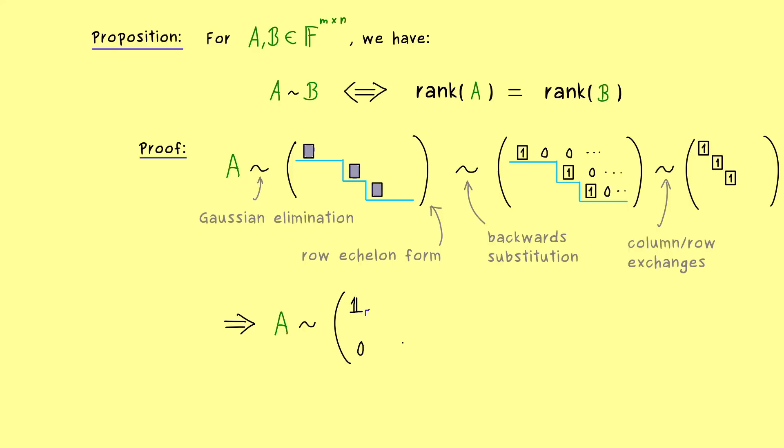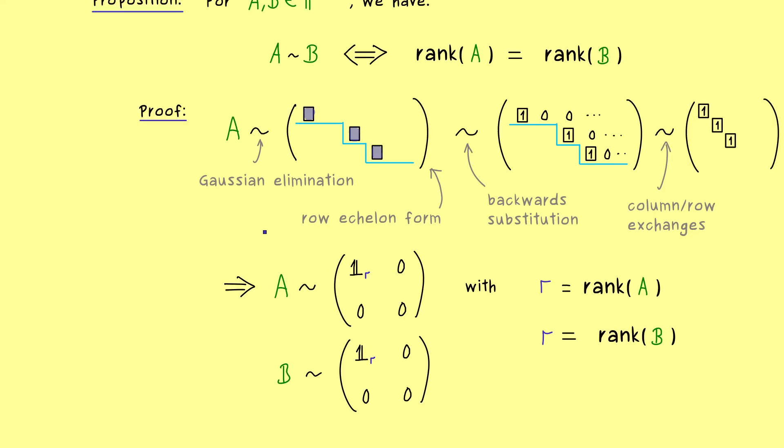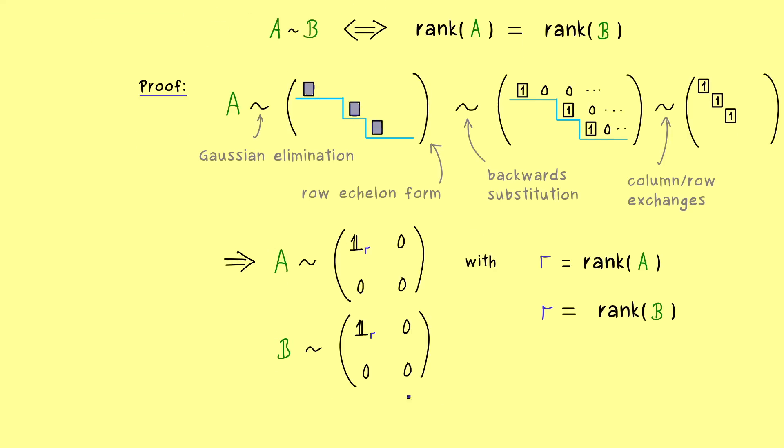So let's say, we have the number r given as the rank of A. And there we see it, if our matrix B has the same rank as A, we can do similar transformations to reach this form in the end for B as well. So we get that B is equivalent to the same matrix, and by the transitive rule of an equivalence relation, we get that A is equivalent to B as well.